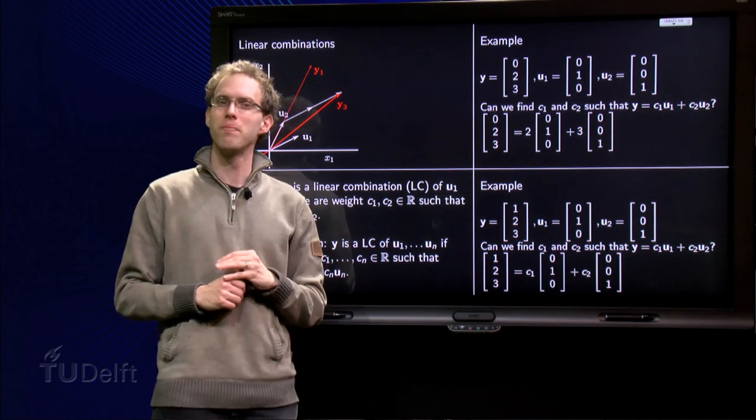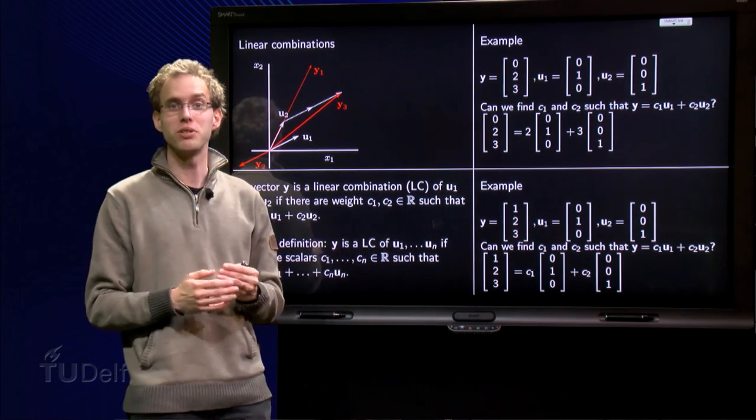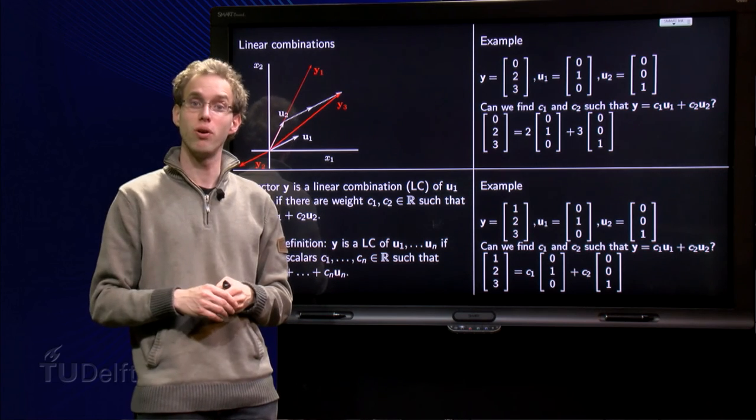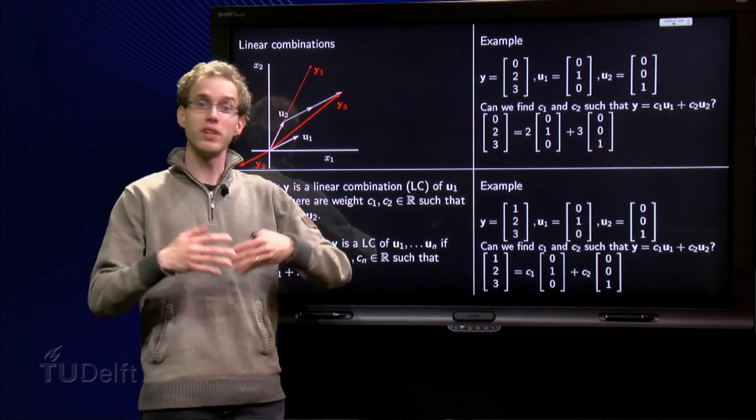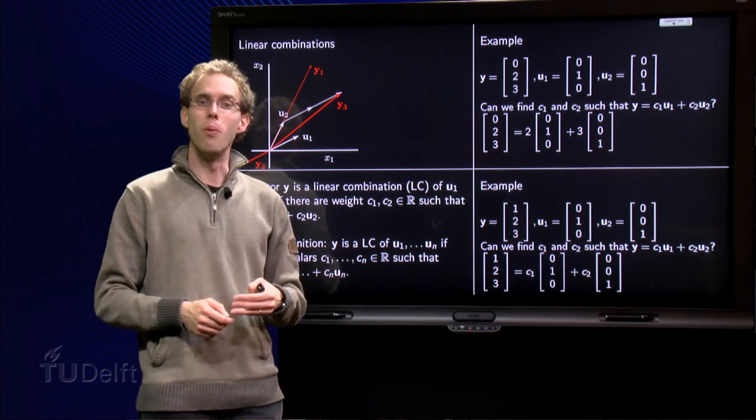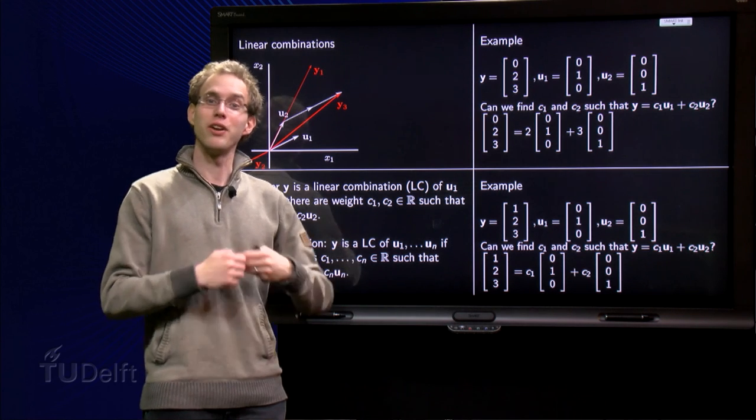I know you might be wondering, those u1's and u2's are very nice with many zeros, so in this case you can see very fast whether y is a linear combination of u1 and u2. But what happens if you have more complicated u1's and u2's or even more vectors? Well, good question. Let's look at that in another web lecture.